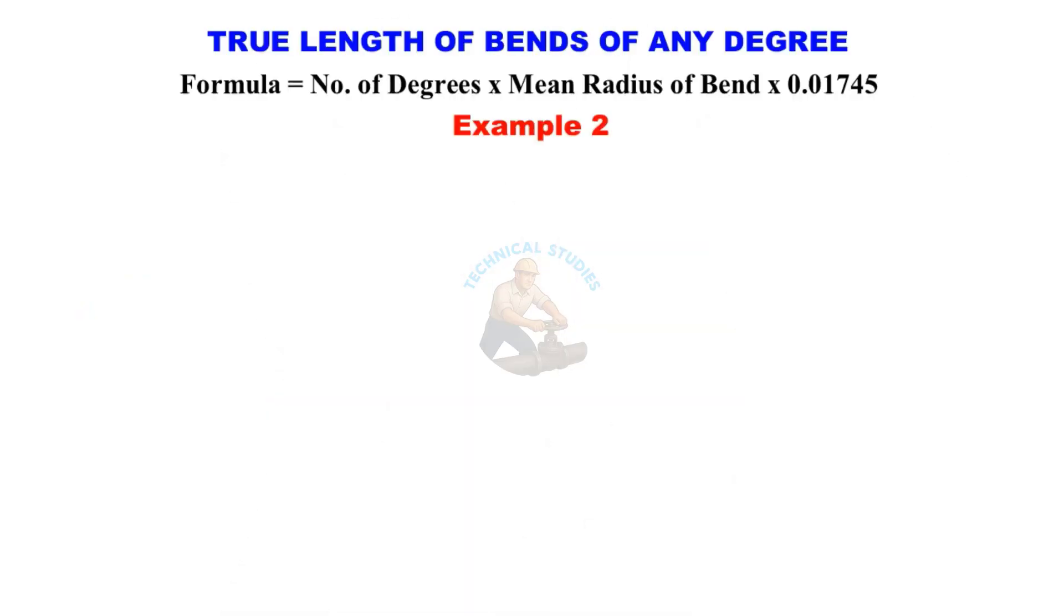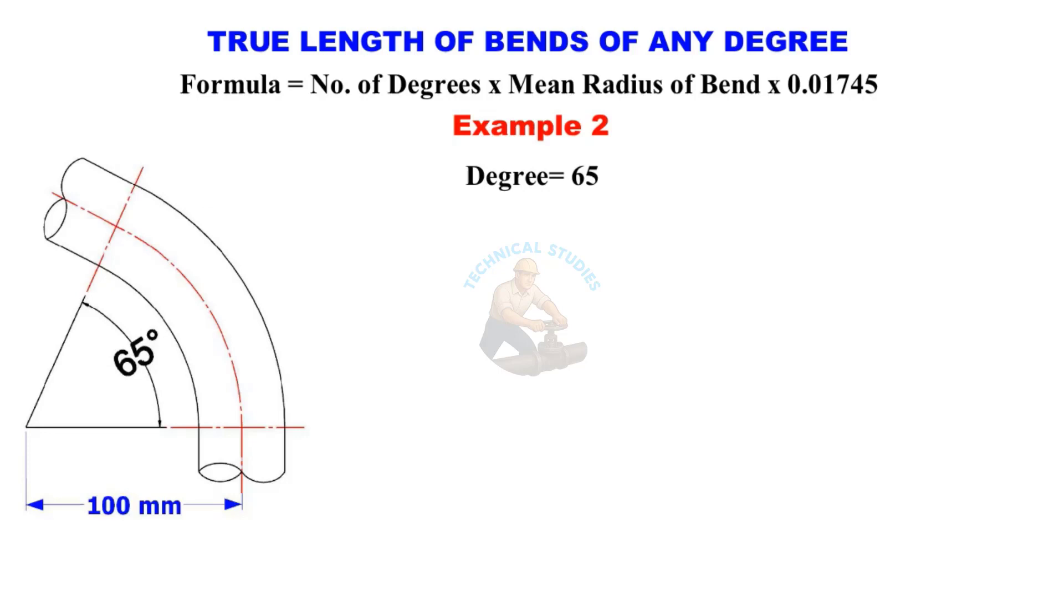Example 2: Degree equals 65, radius equals 100 millimeters. True length is 65 times 100 times 0.01745 equals 113.4 millimeters.